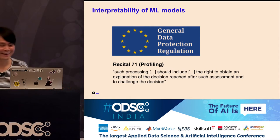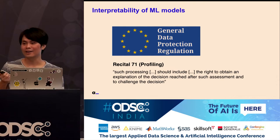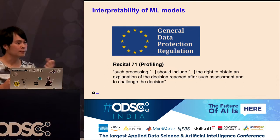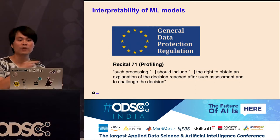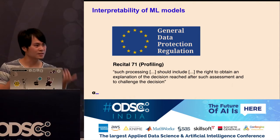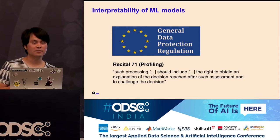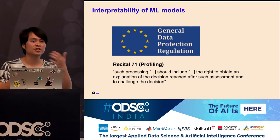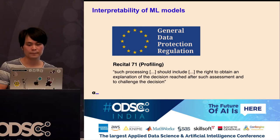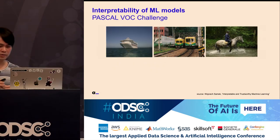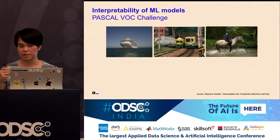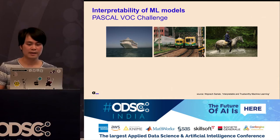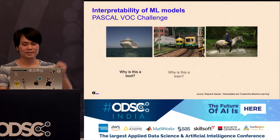Think about a mobile phone contract: in Germany, mobile providers can reject you because of a model, and you need to understand why. This is very important. Here is an example from Dr. Wojciech Samek from the Fraunhofer Institute in Berlin, who recently gave this talk to my team. It's about interpretable and trustworthy machine learning. It's an example from the Pascal VOC Challenge, similar to ImageNet. He asked: why is this a boat? Why is this a train? And why is this a horse?